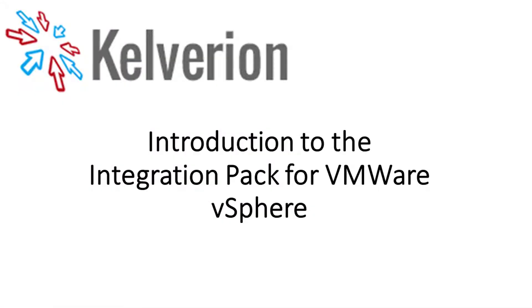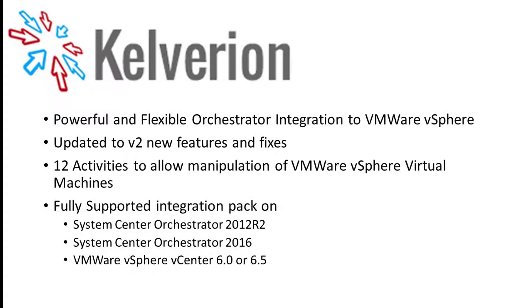Welcome to this introduction to the Calverian Integration Pack for VMware vSphere. The Integration Pack for VMware vSphere is a flexible integration pack for System Center Orchestrator. It's been recently updated to version 2 to add new features and fixes. There are 12 activities for the manipulation of VMware vSphere virtual machines, and like all of our integration packs, it's fully supported.